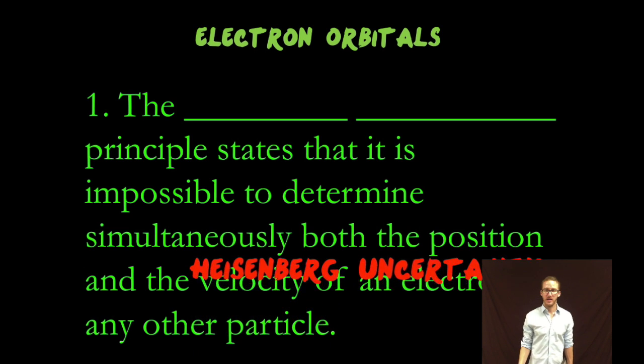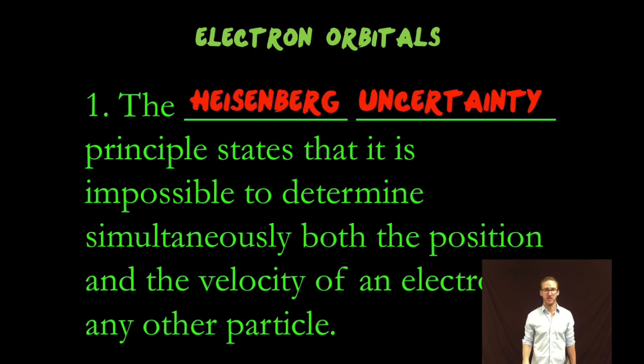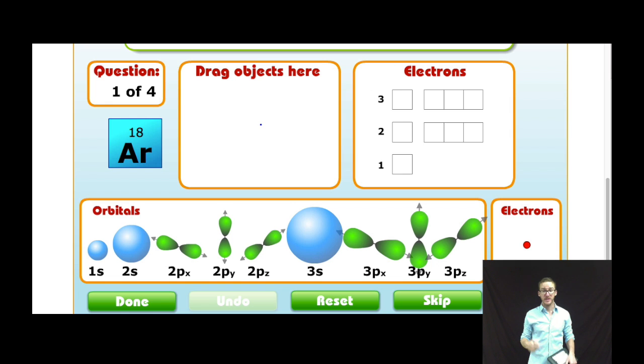Okay, so first thing we need to understand is that the Heisenberg uncertainty principle states that it is impossible to determine simultaneously both the position and the velocity of an electron or any other particle. I'm going to come back to this model of the atom where I've got my nucleus represented by this tiny blue dot, and this empty space surrounding it is going to represent the electron cloud.